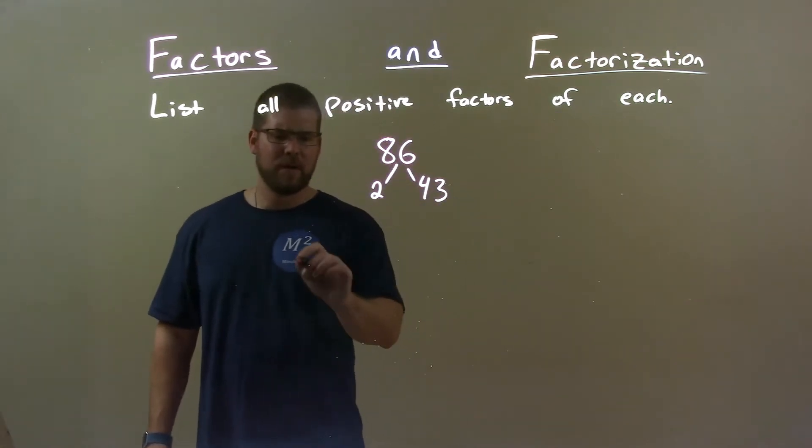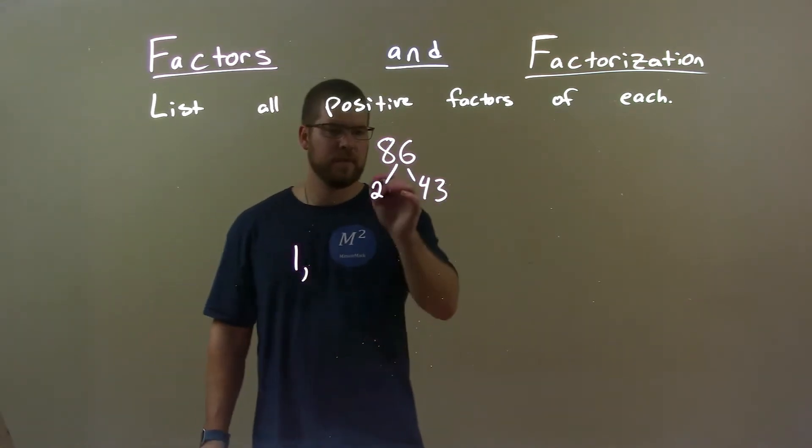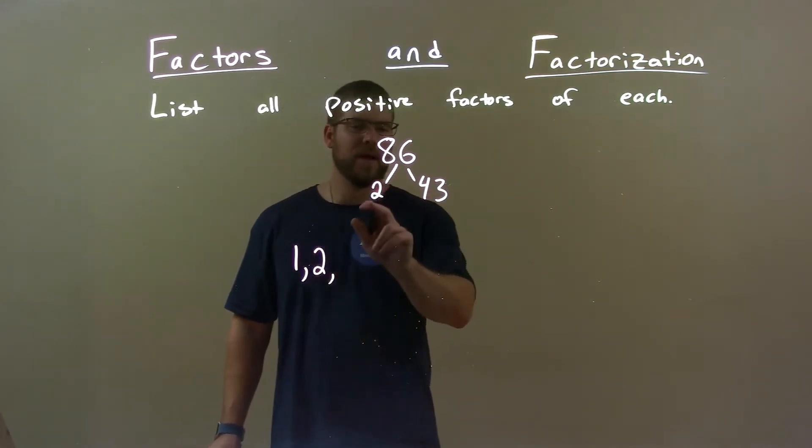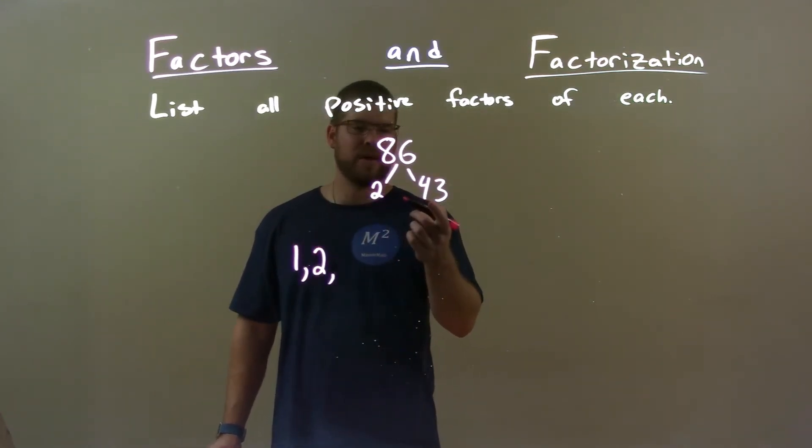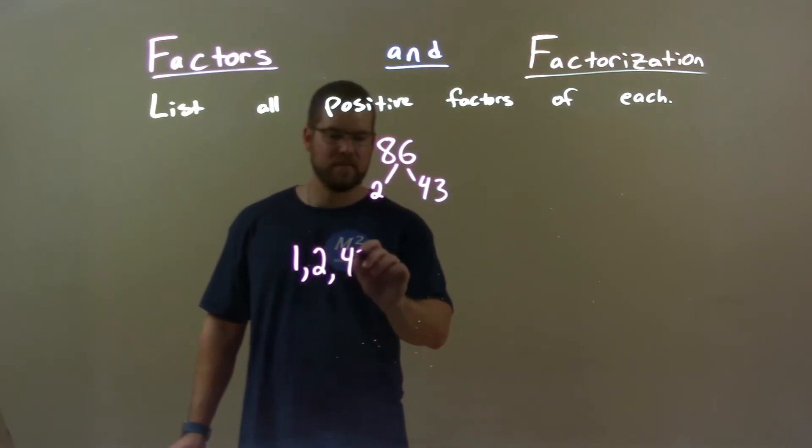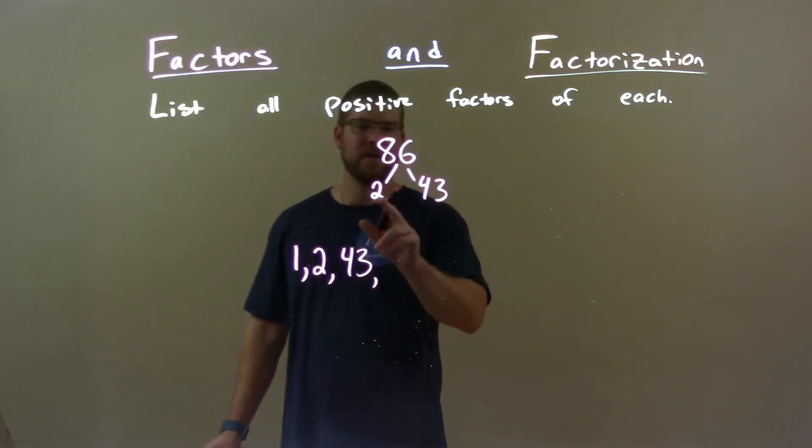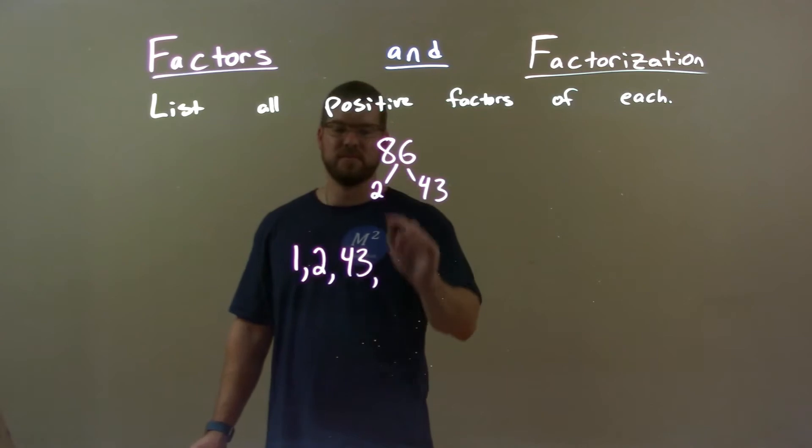When I compile my list, it will always include 1, and then 2 is there, the prime number. There's nothing else that I can multiply together except I know 43 goes into 86. So 43 is the next, and then 2 times 43 is 86.